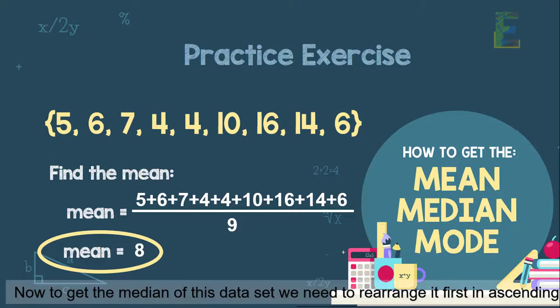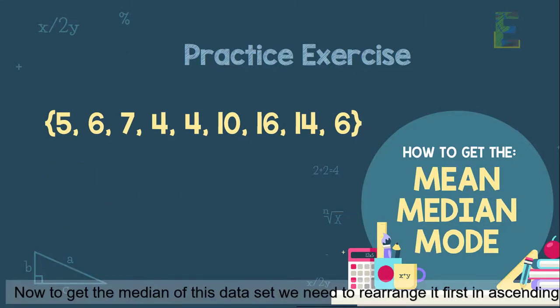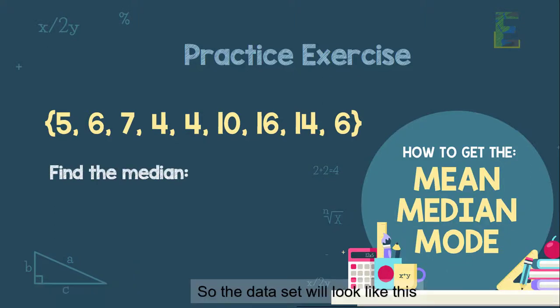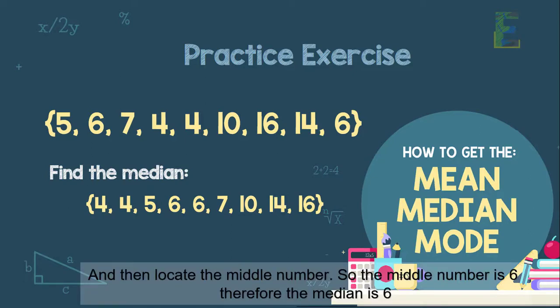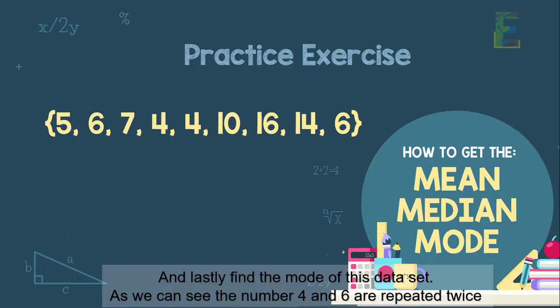Now to get the median of this set, we need to arrange it first in ascending order. So the data set will look like this: 4, 4, 5, 6, 6, 7, 10, 14, 16. And then locate the middle number. So the middle number is 6. Therefore, the median is 6.